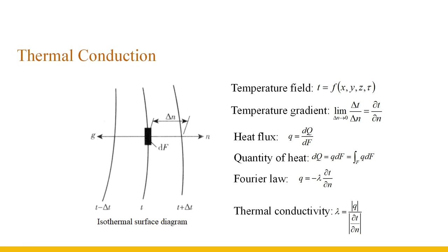Since there is no temperature difference on the isothermal surface, thermal conduction cannot proceed along the isothermal surface and must pass through it. The amount of heat passing through a unit area of an isothermal surface per unit time is called the heat flux, written as q = dQ/dF. When the heat flux is uniformly distributed over area F, the heat flux Q = q × F.